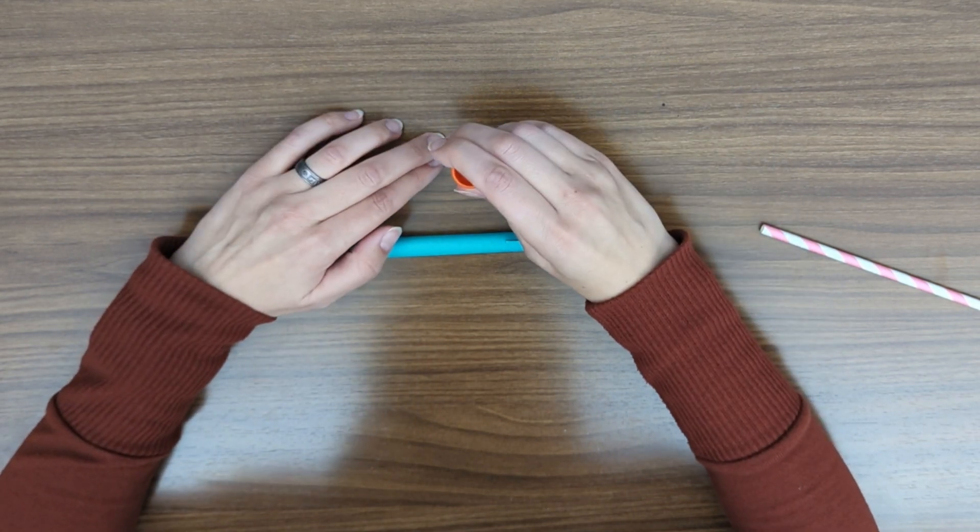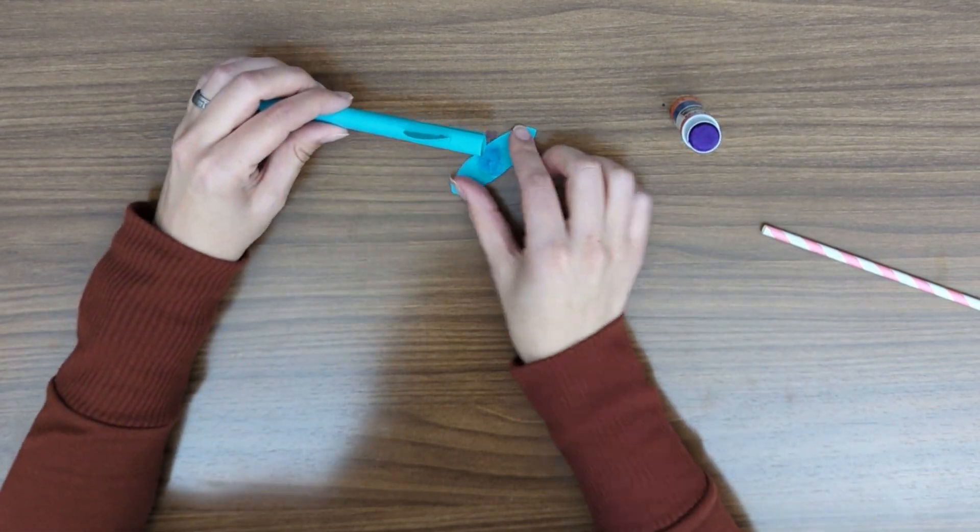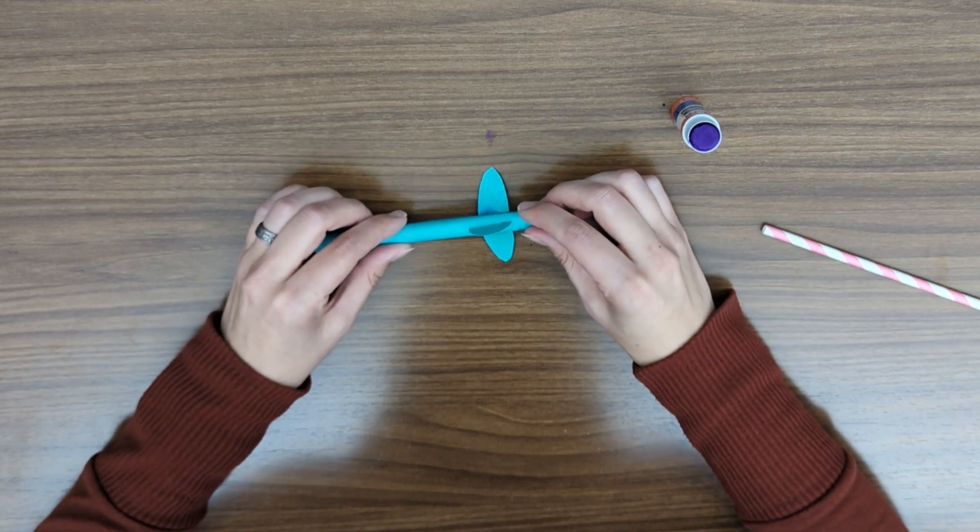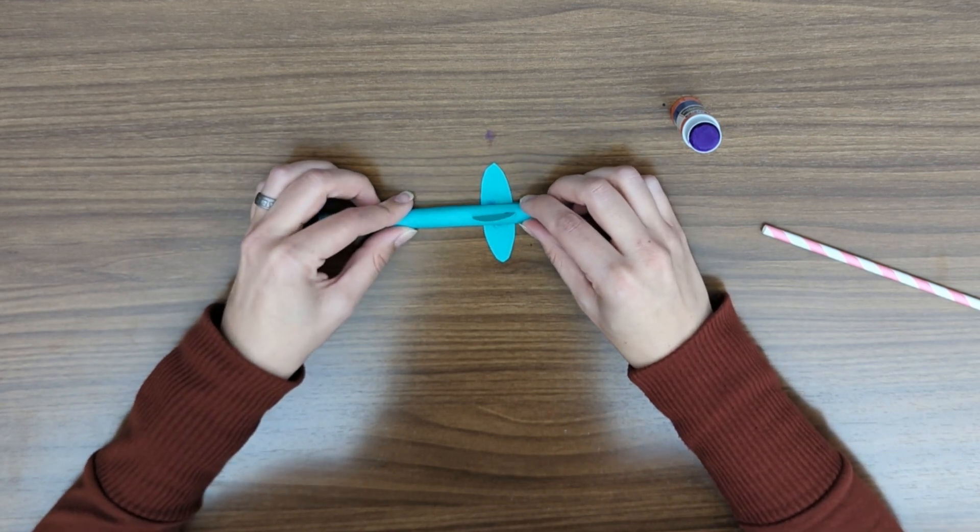Last of all, we're going to put some glue in the middle of our oval. Right where the circle is, we're going to stick the oval on the bottom of our rocket. Seems good.